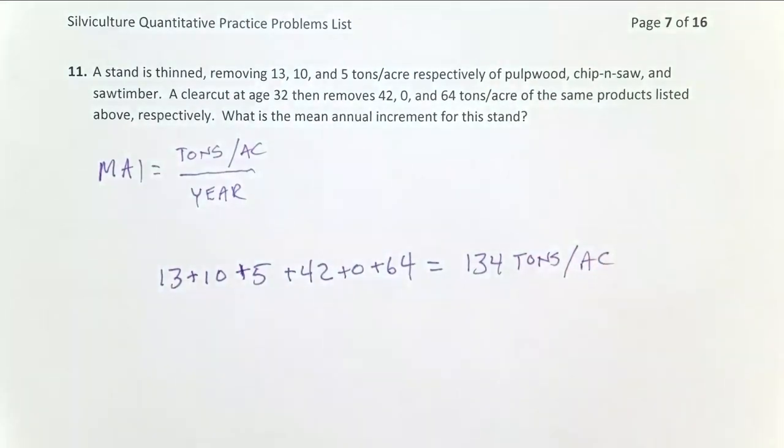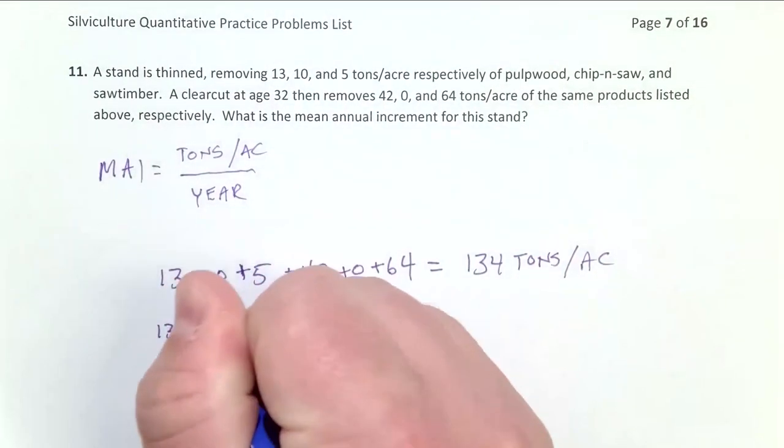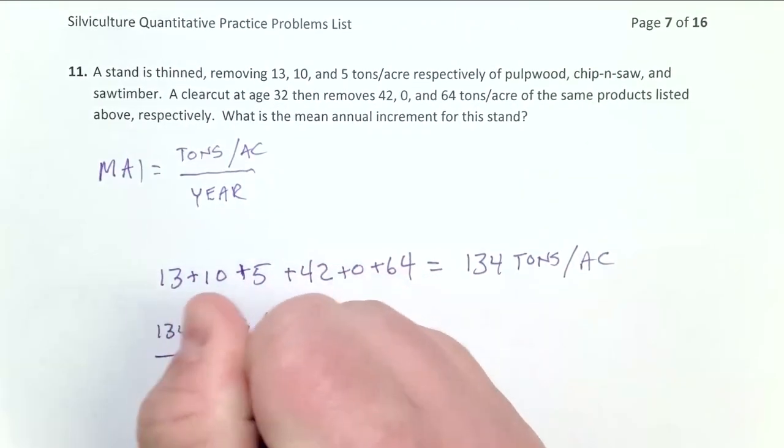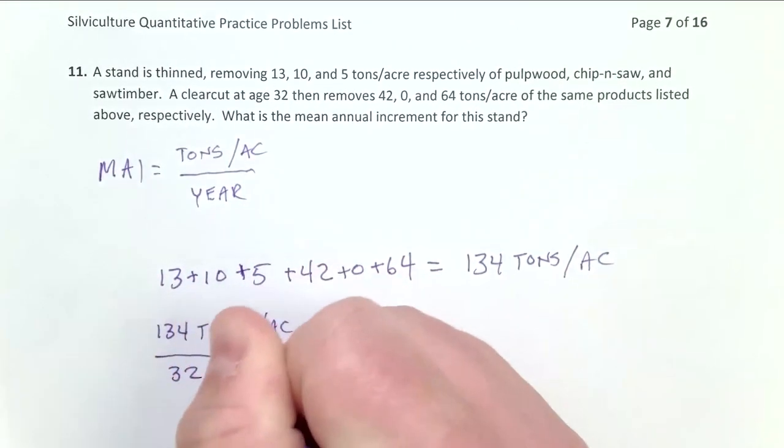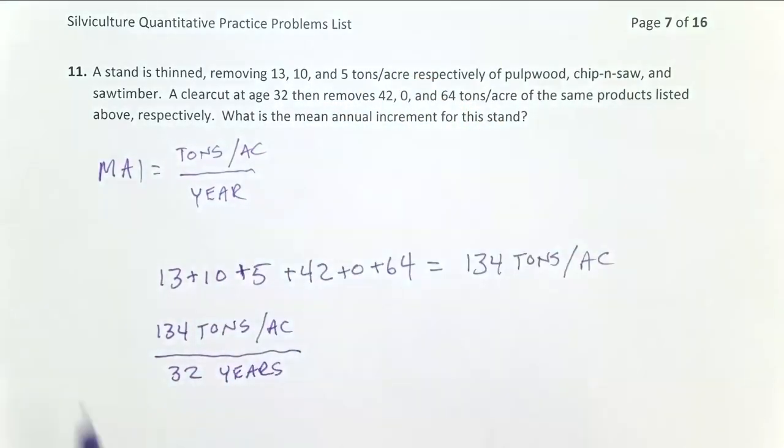Now to calculate mean annual increment, the 134 tons per acre was removed over a total rotation length of 32 years. So I take 134 tons per acre divided by 32 years. You don't use the age of the thin, use the whole rotation. Mean annual increment is averaged over that entire rotation.